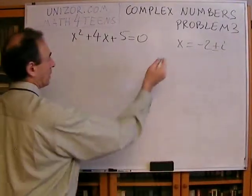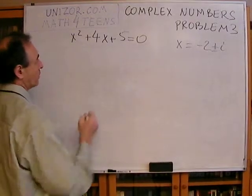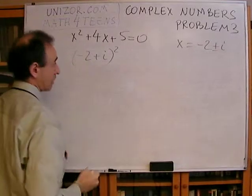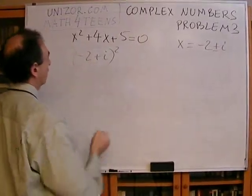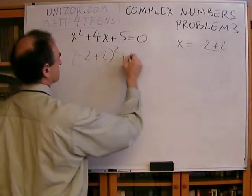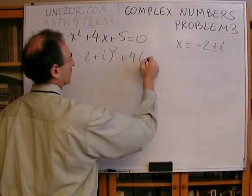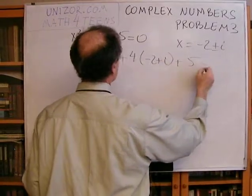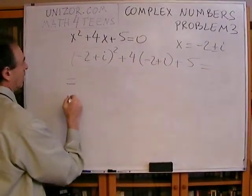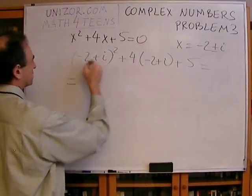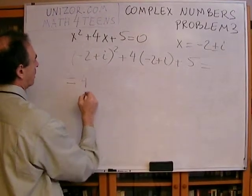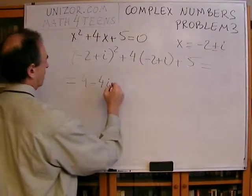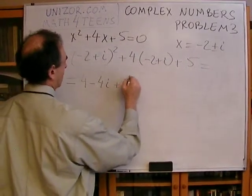All right, first of all, x squared: minus 2 plus i squared. Let's check for plus first. x plus 4x plus 4 minus 2 plus i plus 5 equals minus 2 squared is 4, minus 4i, plus i squared, right?